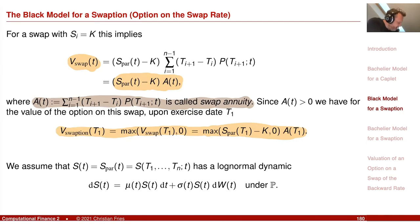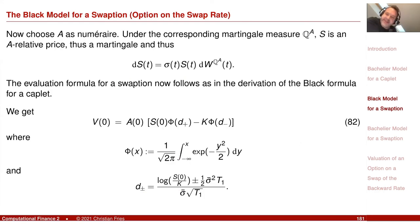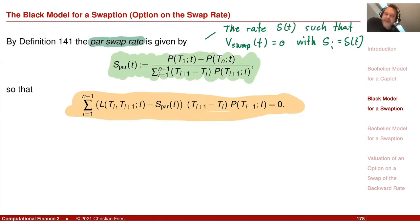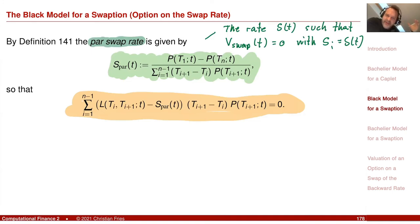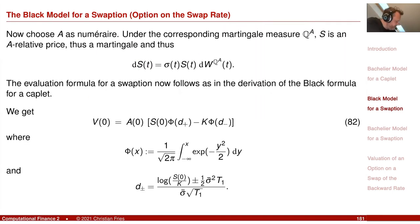We assume that the par swap rate follows a log-normal model — the same as for the Black model for the Caplet. We assume this dynamic under P, and then we choose the numeraire wisely. The candidate for the numeraire is the swap annuity. If we choose the swap annuity as numeraire, we see that the par swap rate is a martingale, since it is a portfolio of traded assets divided by the swap annuity.